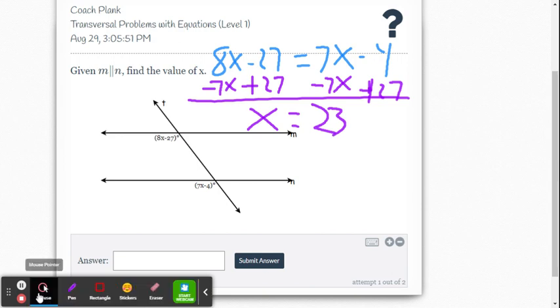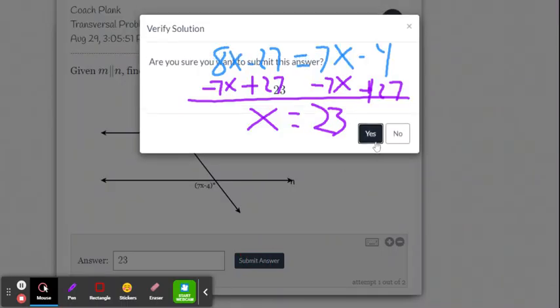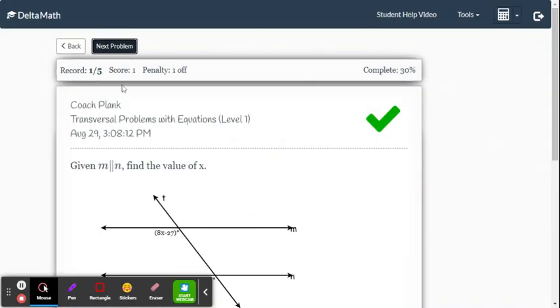All right, so then let's type that in. 23. Again, you just have to put the number in there. You don't have to write x equals here, okay? Just put the number in, even though it doesn't say it on this one. And there it is.